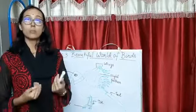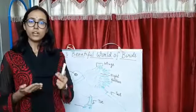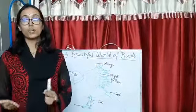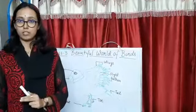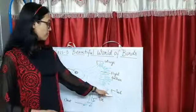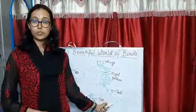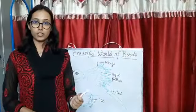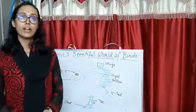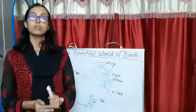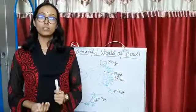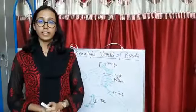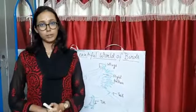The body of a bird is generally lighter as compared to other animals. The tail of a bird helps to change the direction during flight. The body of a bird is covered with feathers, and they have three types of feathers.